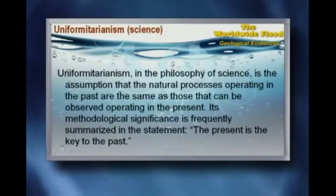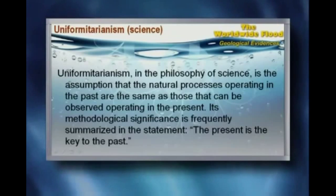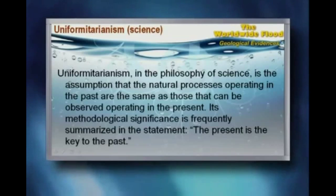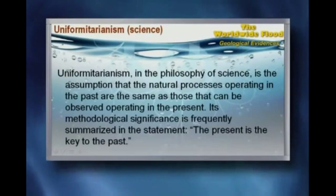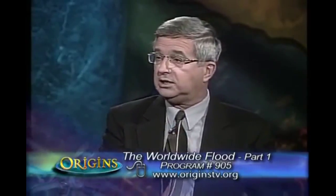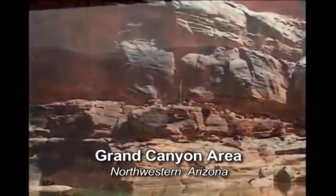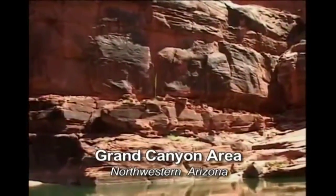Traditionally, geologists have bought into the idea of uniformitarianism — slow and gradual processes. It's a philosophy of science based on the assumption that the processes operating in the past have been the same as what we observe operating in the present. People understand this as 'the present is the key to the past' — meaning slow and gradual processes of rivers slowly carrying sand and mud have always been the way it was, forming rock layers of mudstone and sandstone.